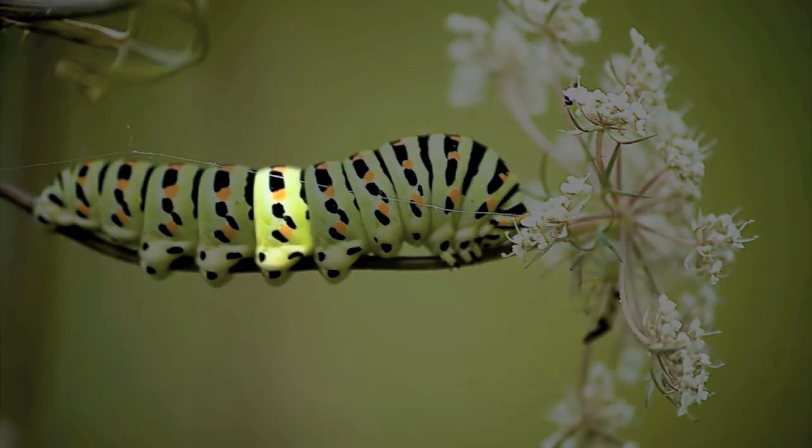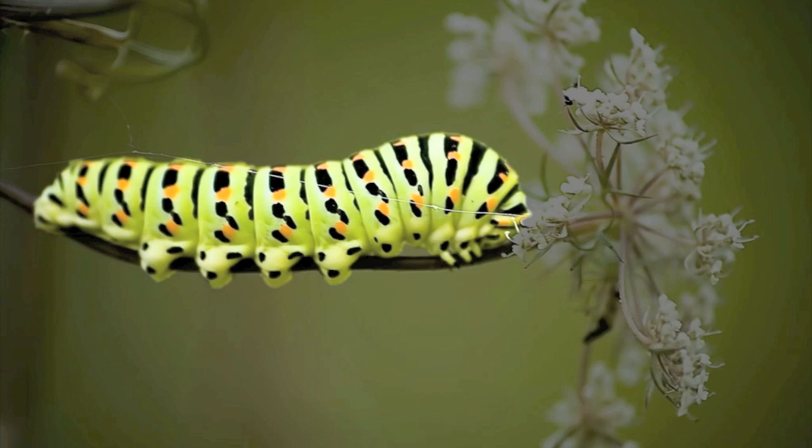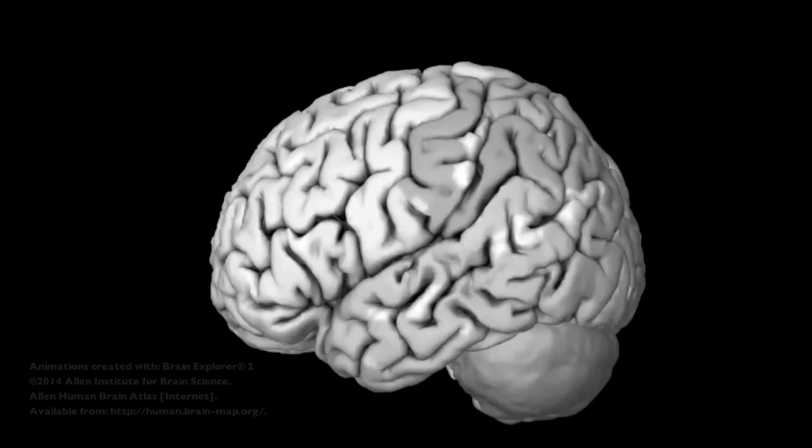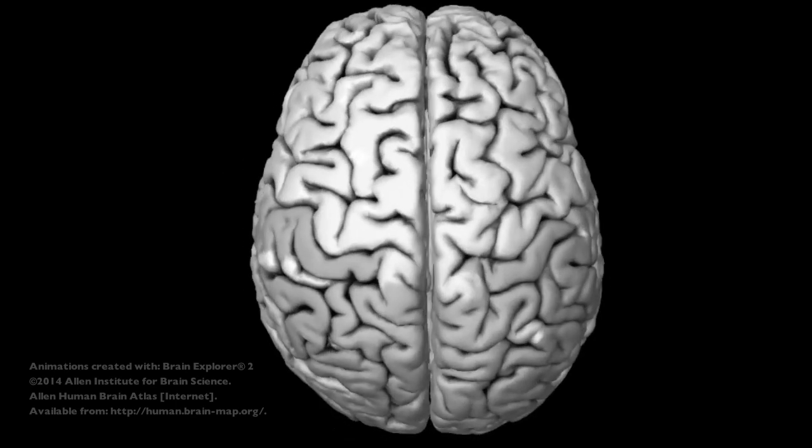Nature also creates modules and makes repeated use of them, likewise creating systems that are both modular and regular. And not only the bodies of natural animals are regular and modular, natural brains show the principles of modularity and regularity as well.